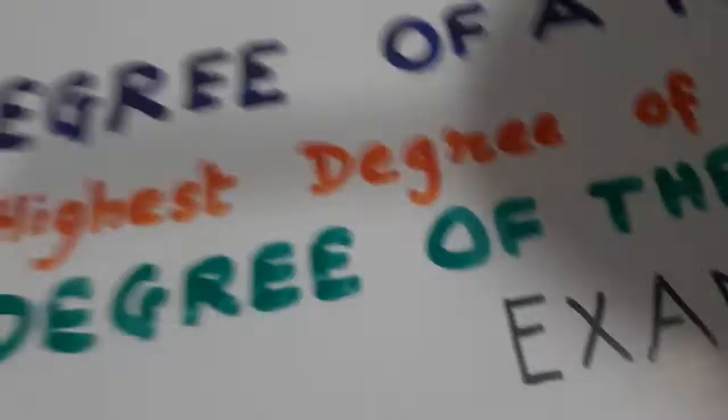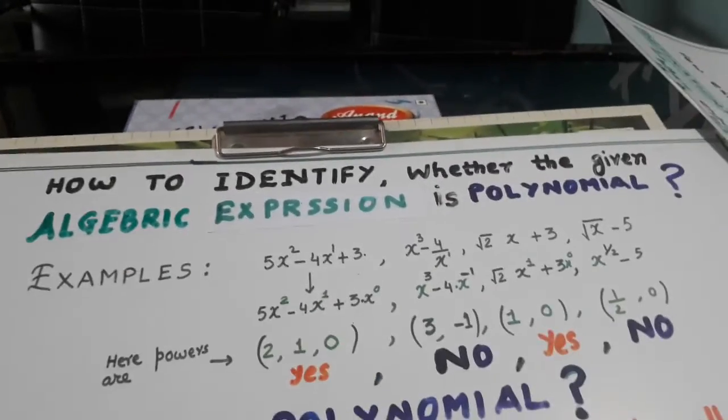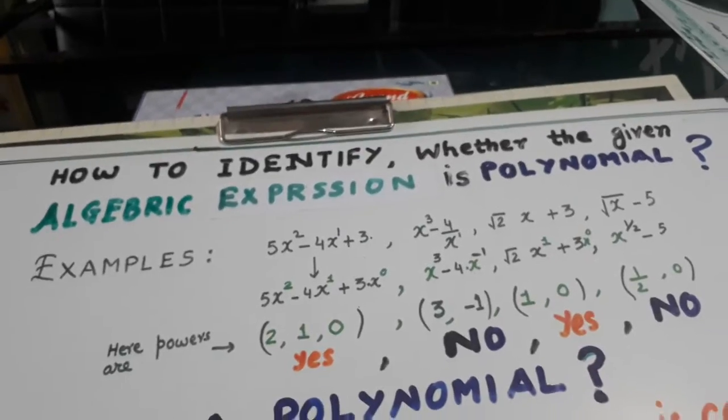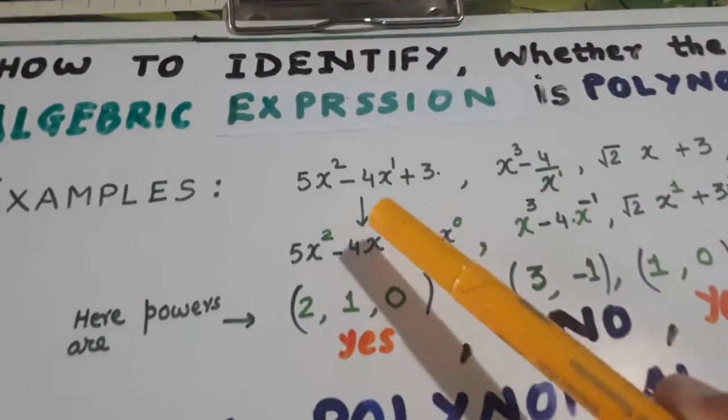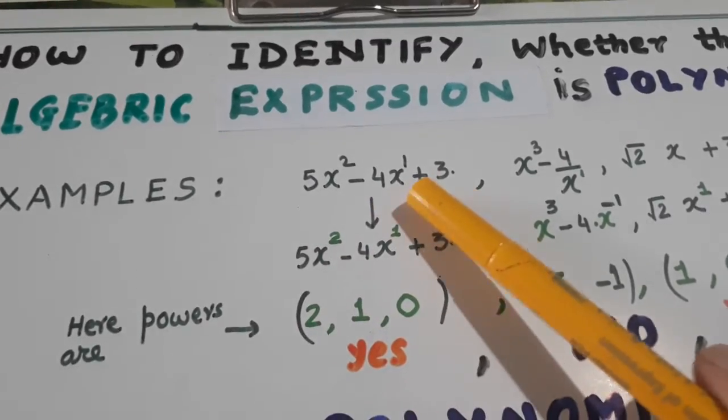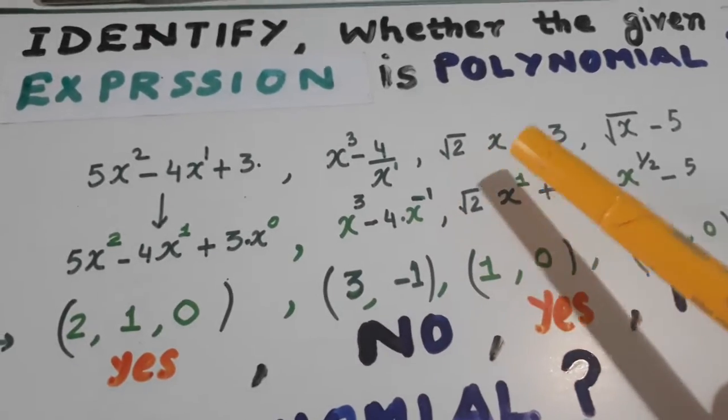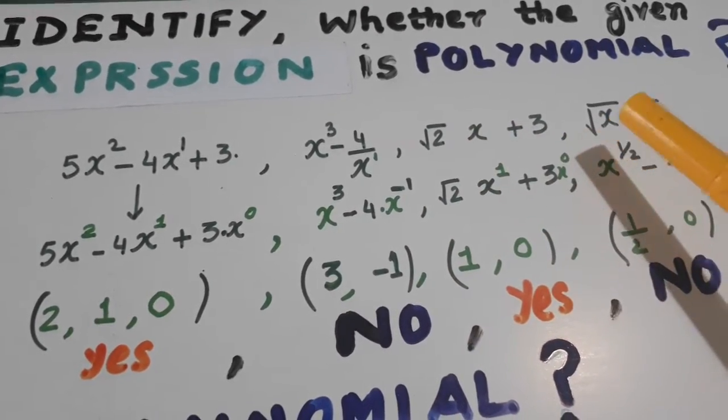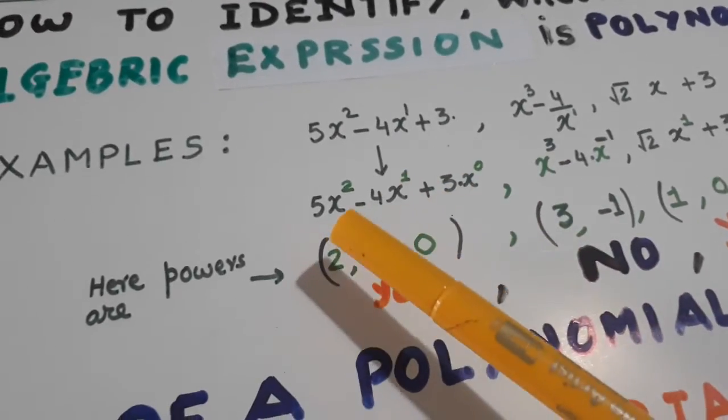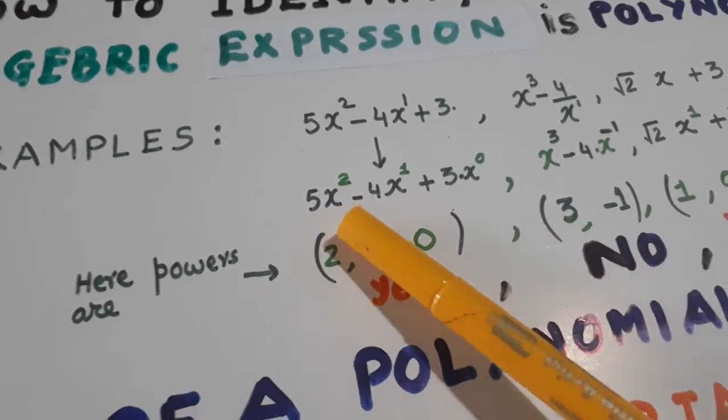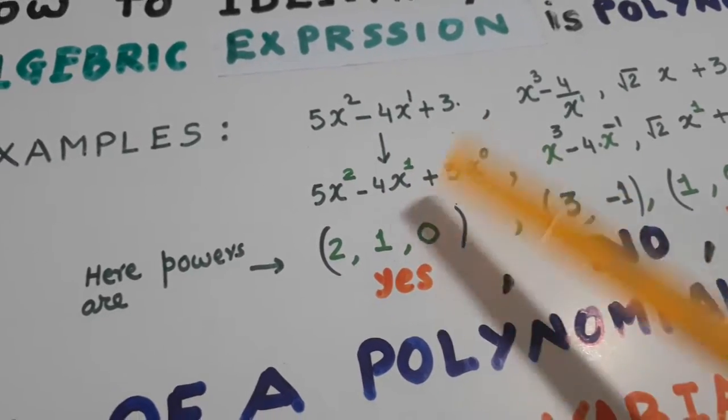Now, how to identify whether the given algebraic expression is a polynomial? Examples: 5x square minus 4x plus 3, x cube minus 4 over x, root 2x plus 3, root x minus 5. Yahan pe x power 2 hai, yahan pe x power 1 hai, yahan x power 0 hai. Yes, it is a polynomial.